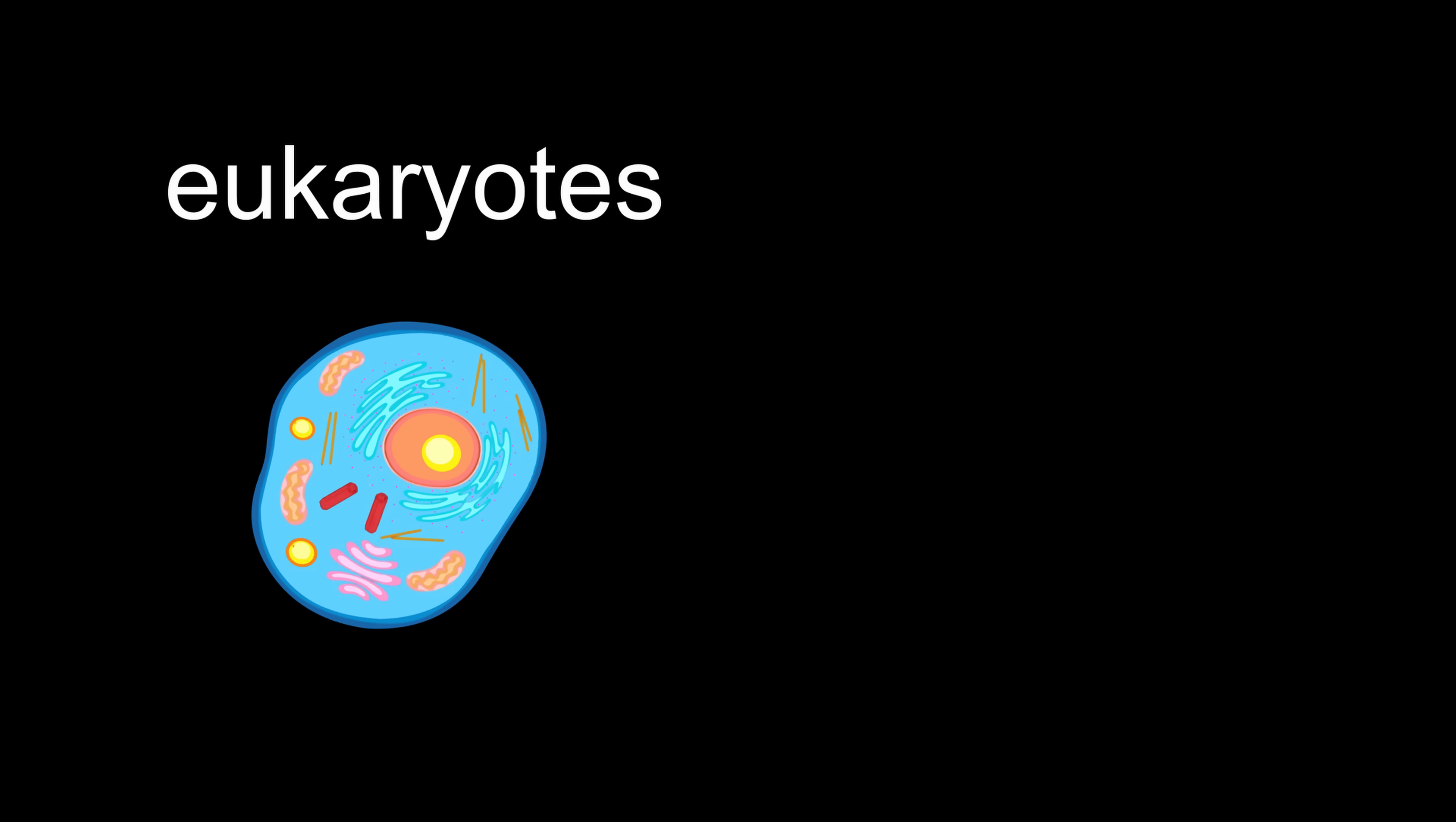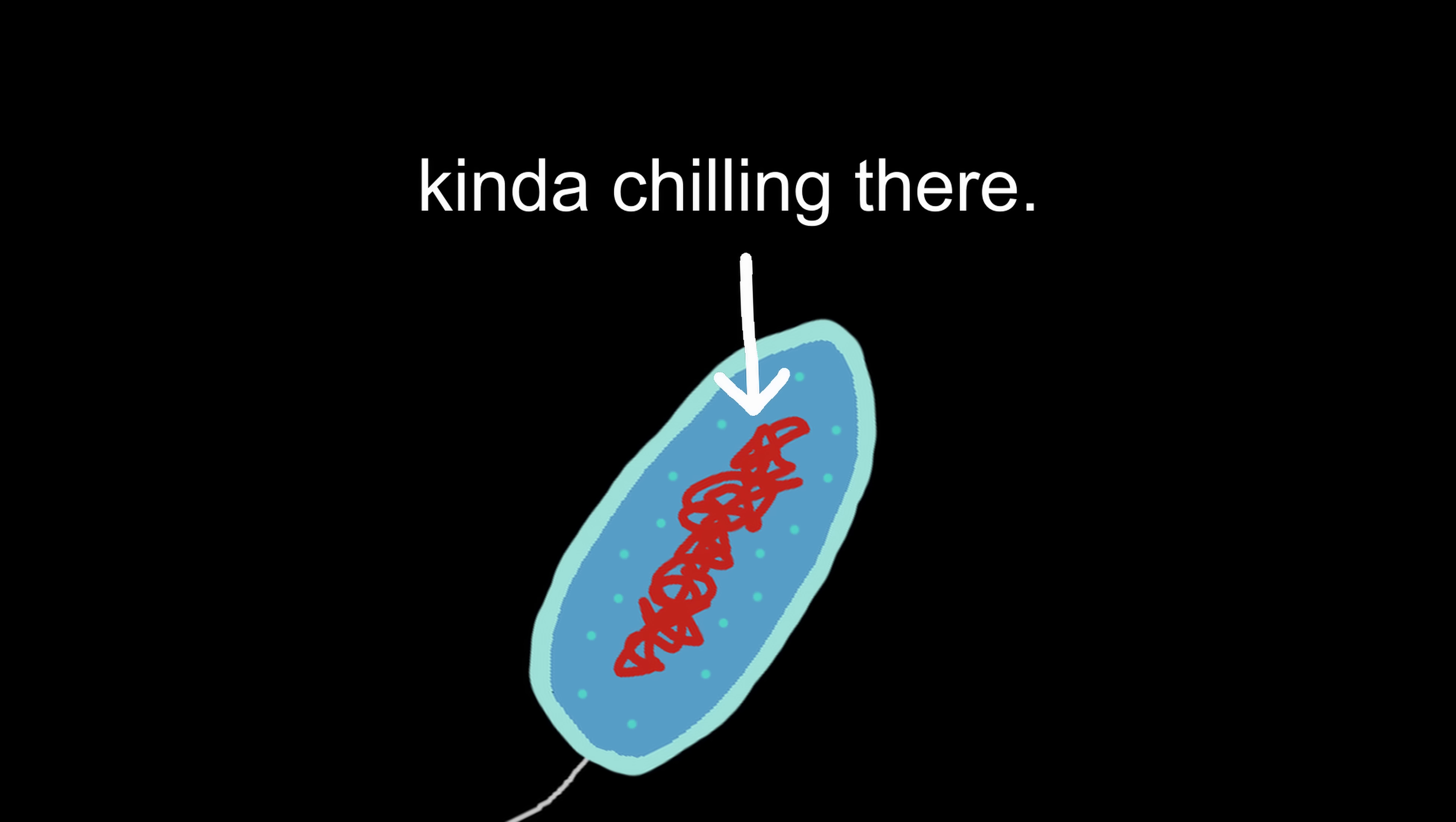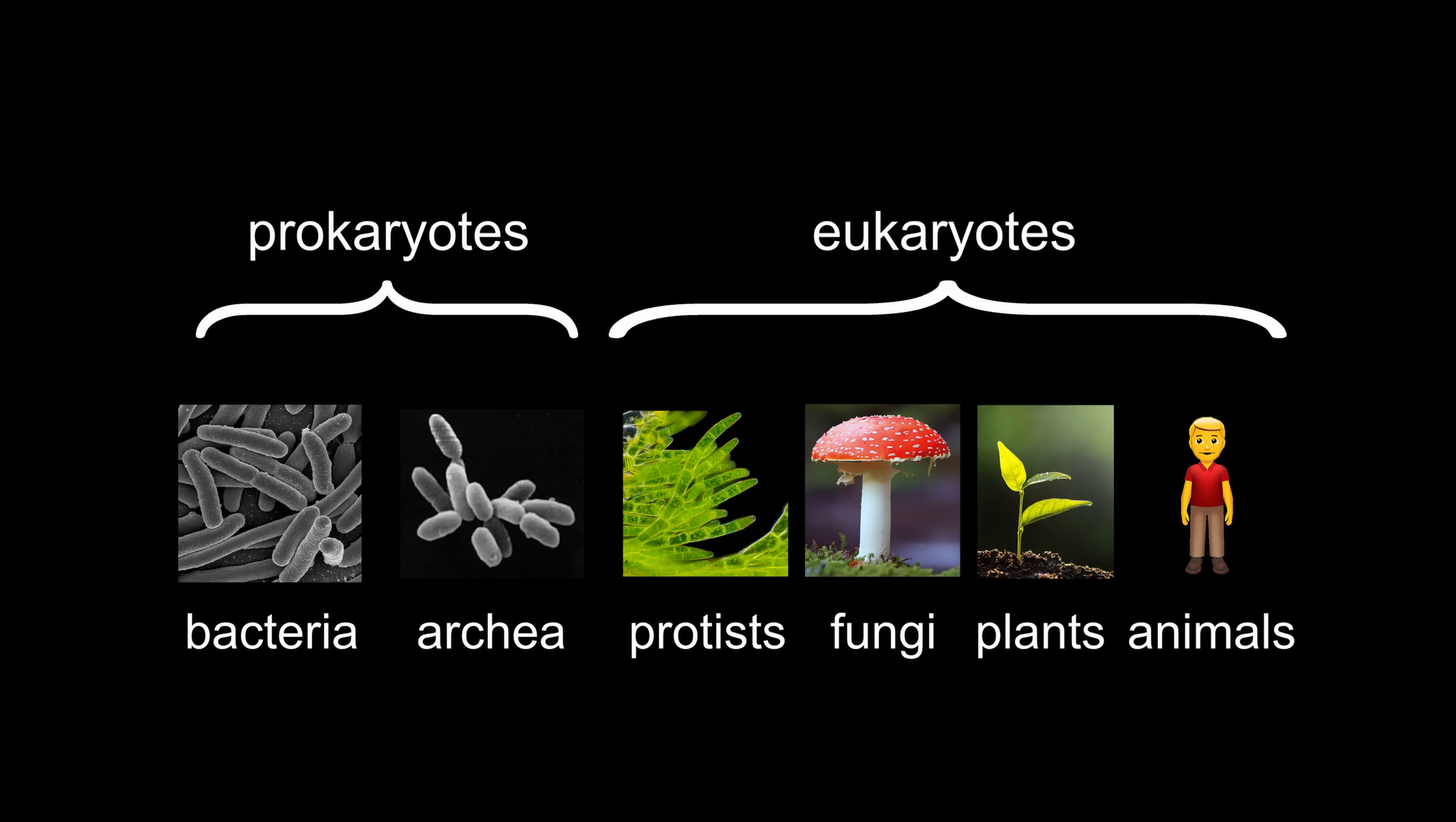Eukaryotes have fancy organelles which are bound by membranes, like the nucleus inside of which is DNA. Prokaryotes have none of those organelles, and the DNA is just kind of chilling there, like freely floating around. This is why prokaryotes are just single cell organisms like bacteria and archaea, whereas eukaryotes can form complex organisms like protists, fungi, plants, and animals.